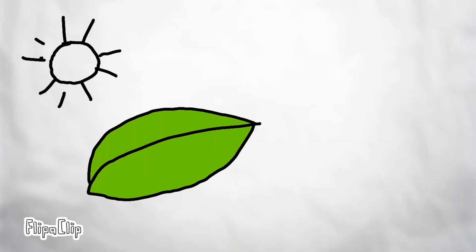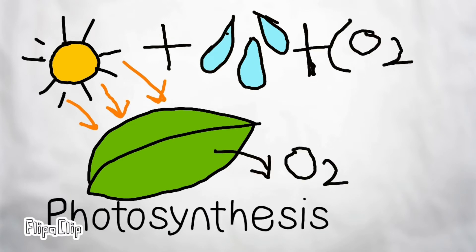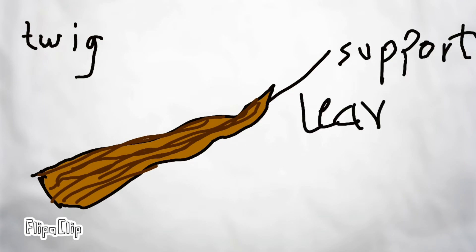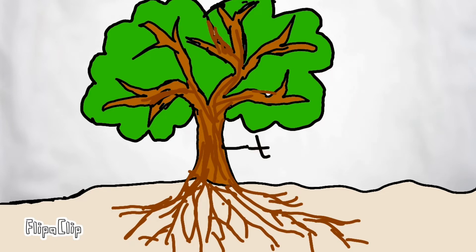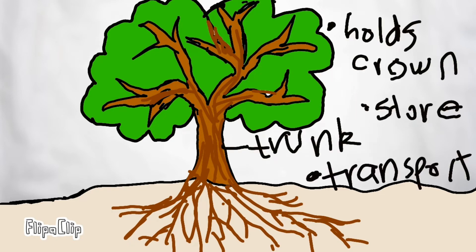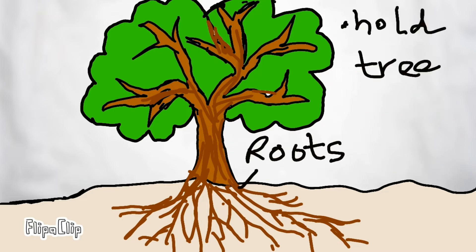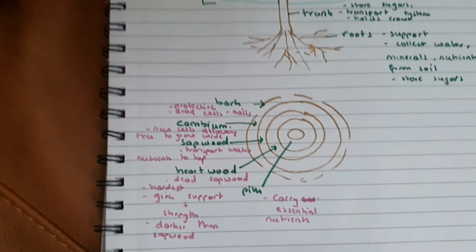The leaves in the crown perform photosynthesis, wherein they produce sugar. The twigs support the leaves. The branches store sugars. The trunk provides support, stores sugars, and transports water. The roots hold the tree, absorb water, and store sugars.